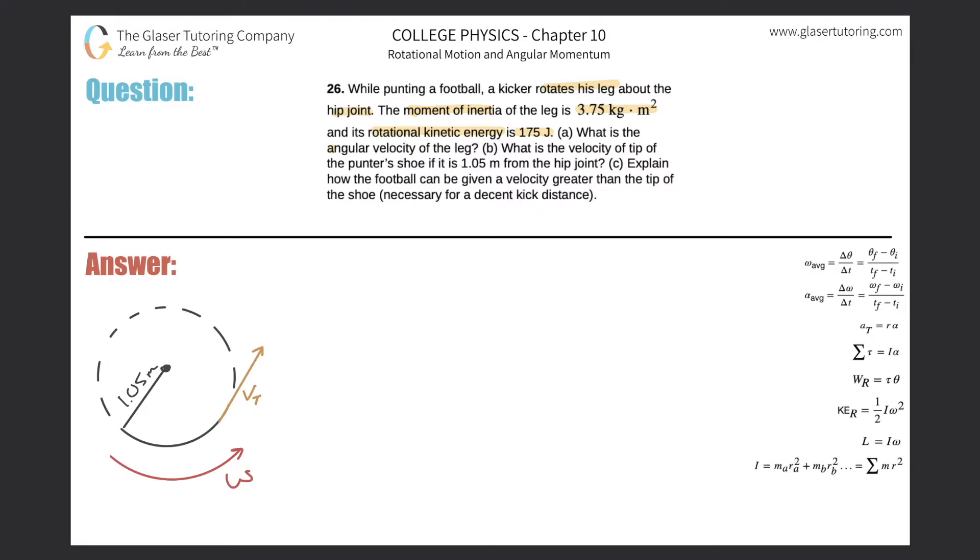The first question is: what is the angular velocity? I need to find omega, and they told me the rotational kinetic energy and the moment of inertia. How do those three variables relate to one another? That's simple - it's the formula over here on the right-hand side.